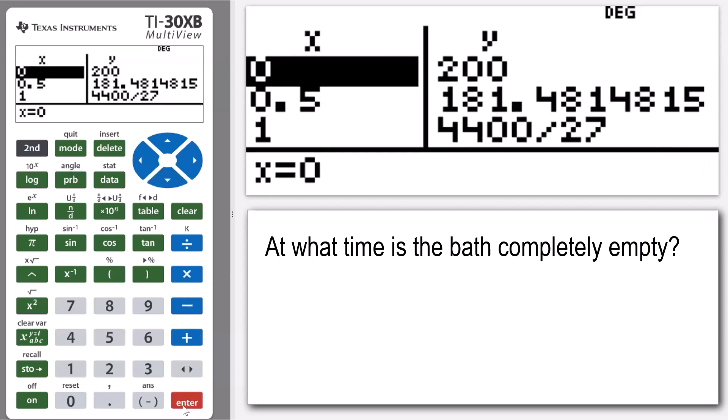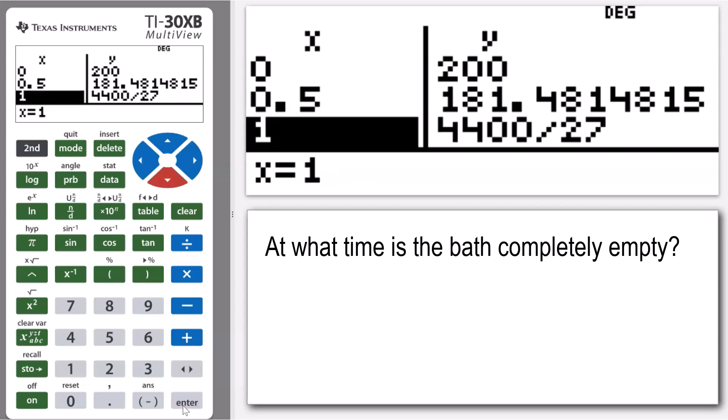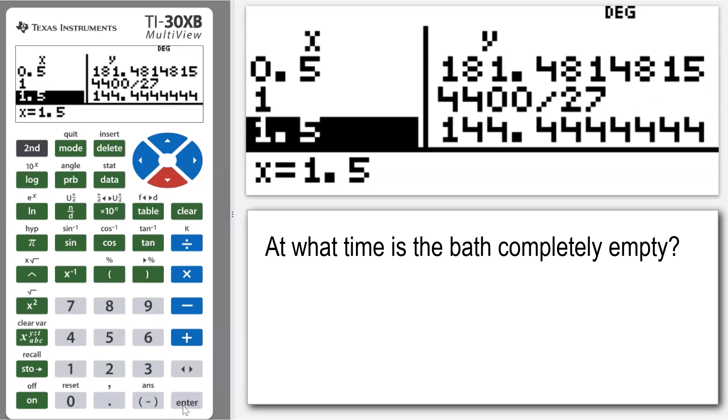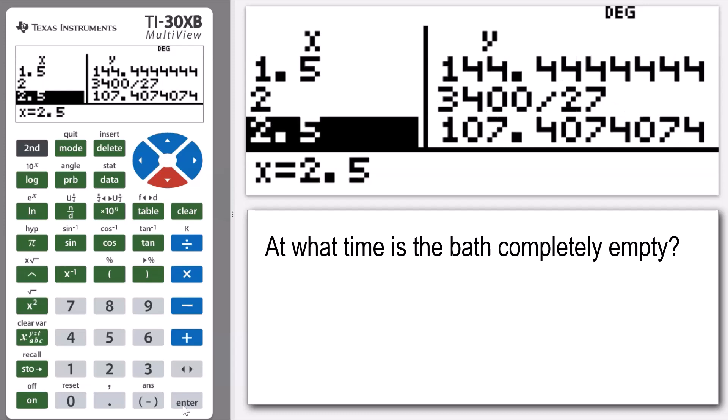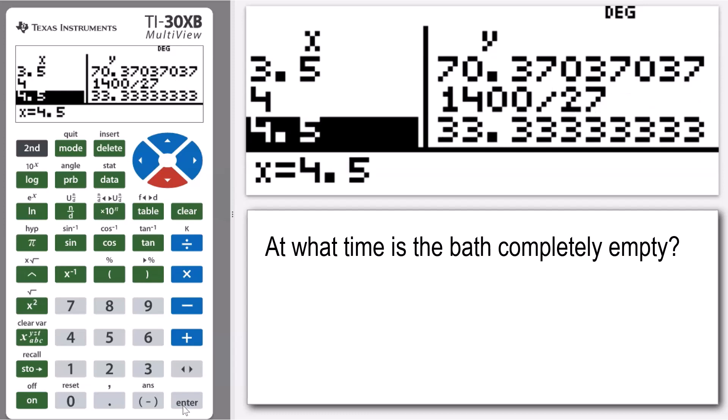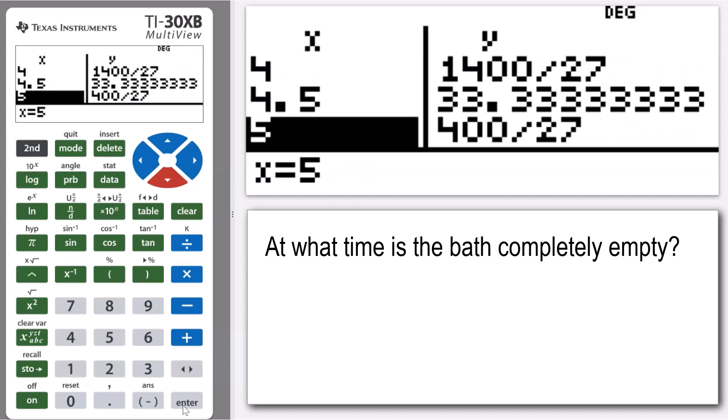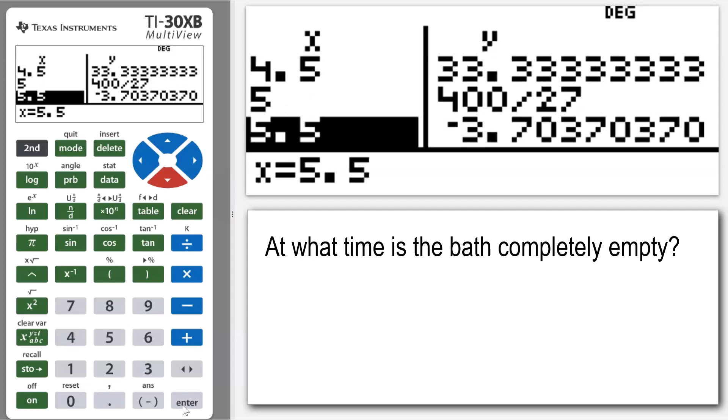And now you can see, okay, so our X is our time and then the Y is the volume. So I'm looking for at what point in time does the volume change from being a positive value to a negative value, because between those two points, that's where our volume must become zero.